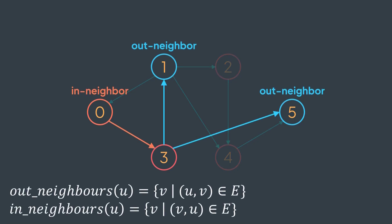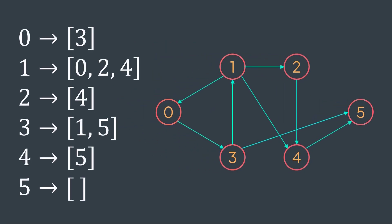And in-neighbors of a vertex u are vertices we can come from. In other terms, vertices v such that there exists an edge from v to u this time. And in an adjacency list of a directed graph, for each vertex, we store out-neighbors only, vertices we can jump to. Here is an example.